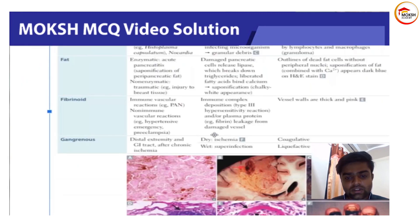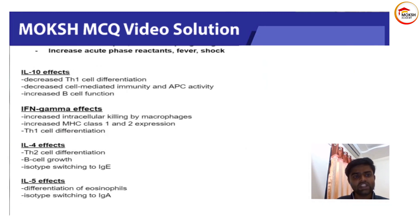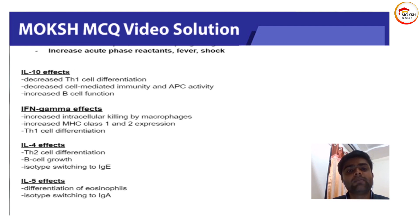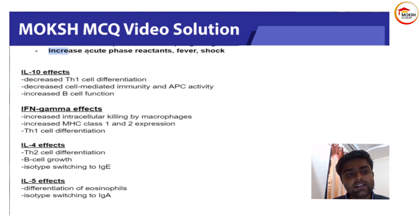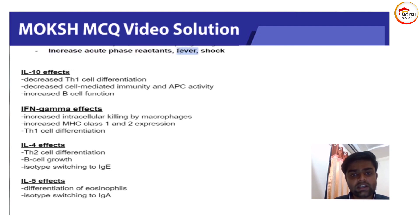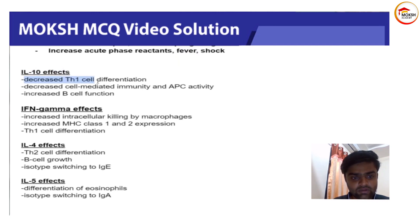Going deeper into IL-1: the source of interleukin-1 is mainly macrophages. It increases neutrophil and macrophage migration, and this increase is seen in acute inflammation, making it a marker for the acute phase reaction. It is mostly seen in fever and shock.